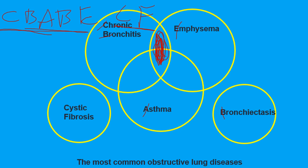An obstructive disease means they can't flow - they can't blow out very well. There's something obstructing their airways from flowing out, like going from a four-lane highway to a two-lane highway. CBaBe CF is going to be all your low flow rates. If it's not one of these, we're looking at low volumes, which would be your restrictive process. All these are obstructive, so we're looking at low flow rates on pulmonary function testing.